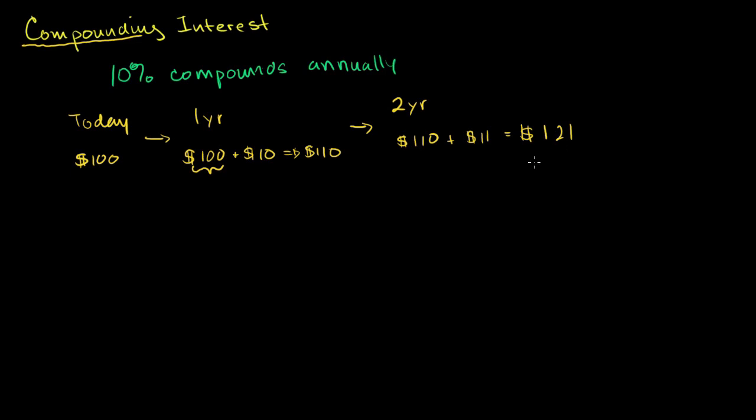And I could just keep doing that. And the general way to figure out how much you have after, let's say, n years, is you multiply it. So let's say this is my original deposit, or my principal, however you want to view it. After x years, so after one year, you would just multiply it. To get to this number right here, you multiply it by 1.1.